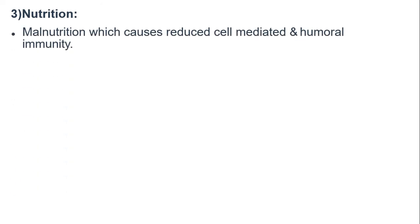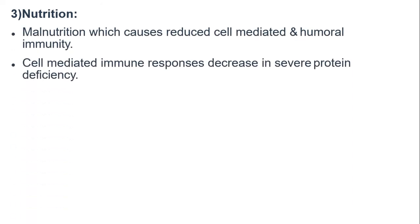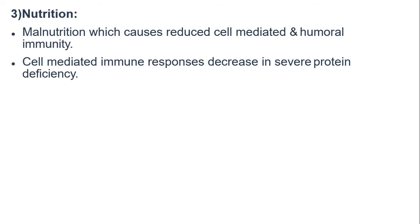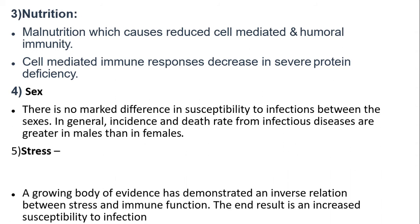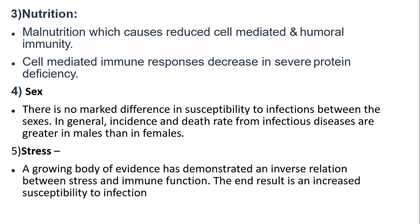Third is malnutrition, which causes reduced cell-mediated and humoral immunity. Cell-mediated immune response decreases in severe protein deficiency. Fourth is sex — there is no marked difference in sensitivity to infections between the sexes, though in general incidence and death rate from infectious disease are greater in males than in females. Stress: a growing body of evidence has demonstrated an inverse relation between stress and immune function, with the end result being increased sensitivity to infection.